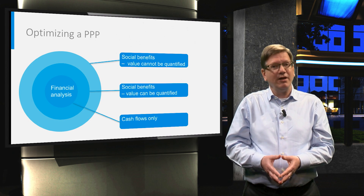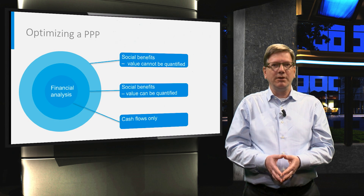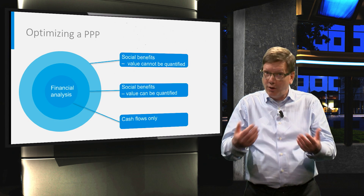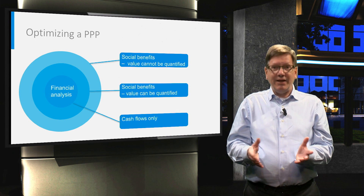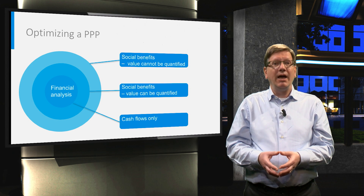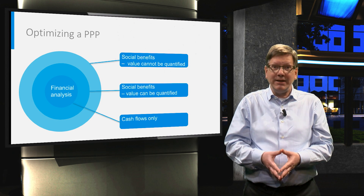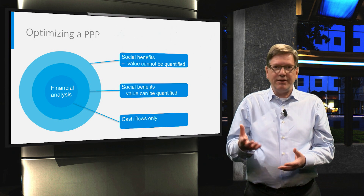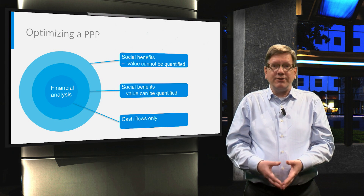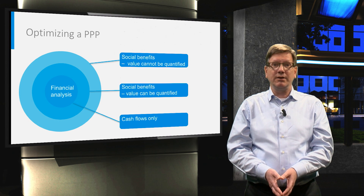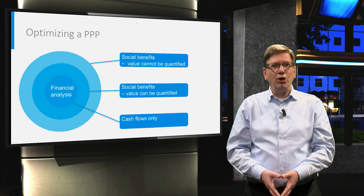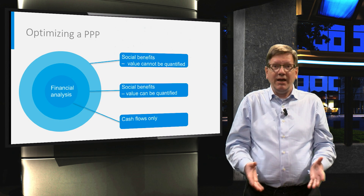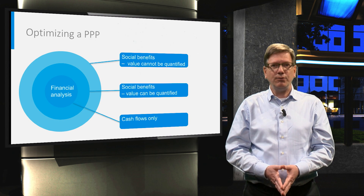Satisfying the private parties is relatively straightforward — we need the project to generate acceptable cash flows for them to make the returns they seek. Satisfying the public stakeholders and maximising social and environmental benefits is trickier to achieve. Once the government has released its concession, it must leave the project to be run by the private parties, who then need to strive towards maximum social and environmental benefits, even where they are not naturally motivated to do so.